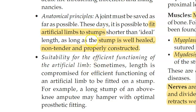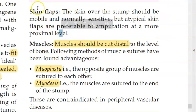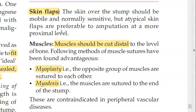For the skin, you should leave a skin flap, because the skin flap has its own blood supply and can be folded over the amputation surface to provide skin closure. Muscles should be cut distal to the level of the bone — techniques such as myoplasty and myodesis can be applied.